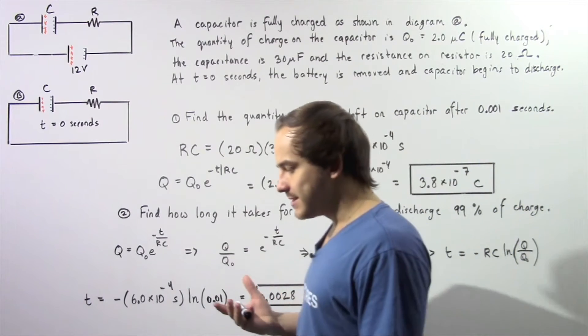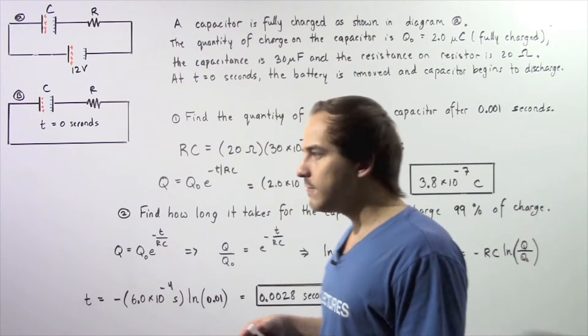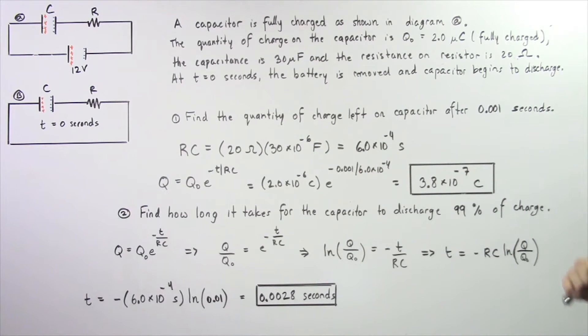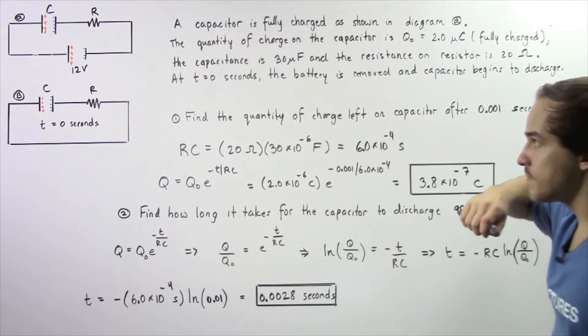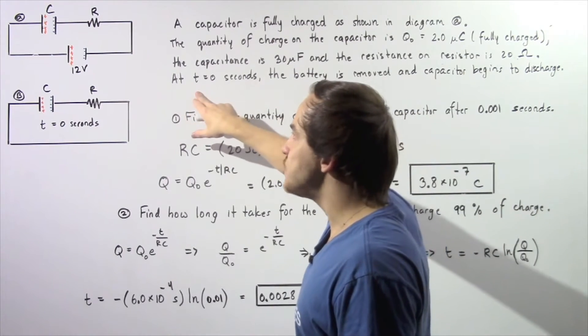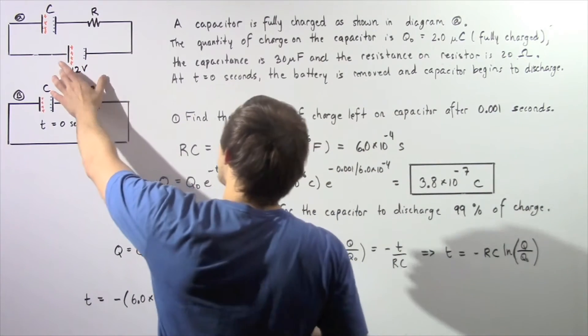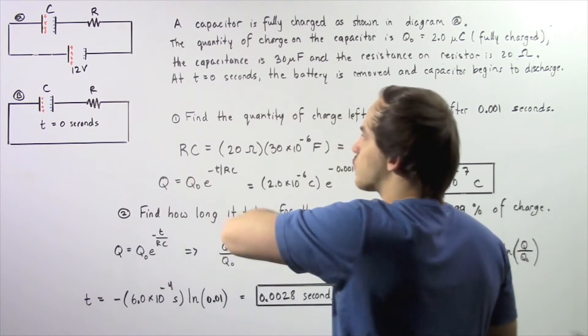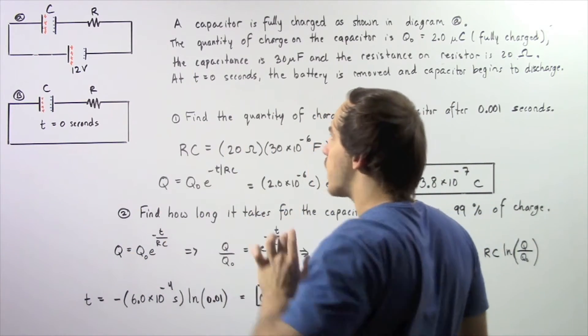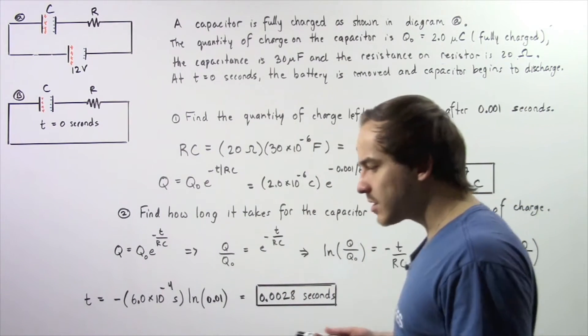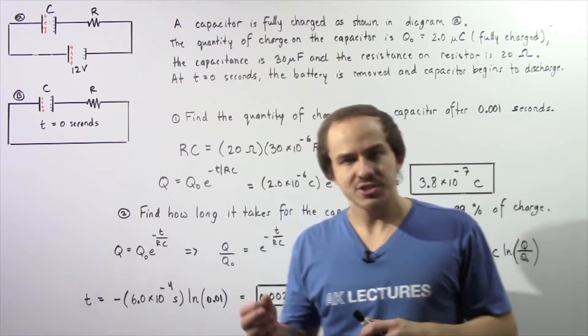The capacitance of our capacitor is given by 30 microfarads, and the resistance on our resistor is equal to 20 ohms. At time initial of 0 seconds, we take our battery and remove it as shown in diagram B. At that moment in time, our capacitor begins to discharge.